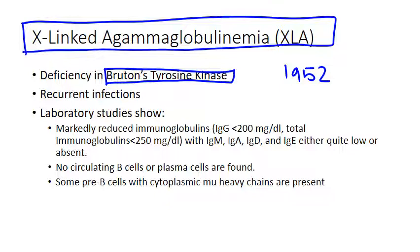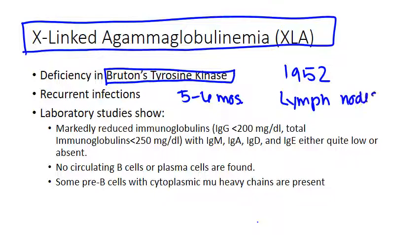Clinically, patients have recurrent sinopulmonary infections, conjunctivitis, dermatitis, and malabsorption, with onset often between five and six months of age. On physical exam, you normally can't find or palpate lymph nodes — because they're just not full enough, not big enough without the B-cells.